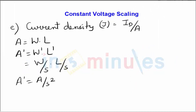Current density is given by ID divided by area. For constant voltage scaling, ID increases by a factor of s, and area reduces by a factor of s squared. Substituting this, ID is increasing by a factor of s while area is reducing by s squared, so the current density increases by a factor of s cubed compared to before scaling. This is one of the major drawbacks of constant voltage scaling.